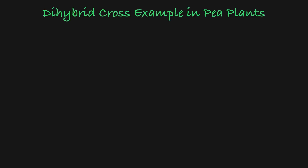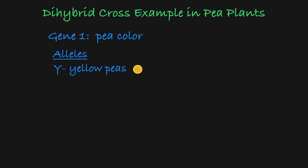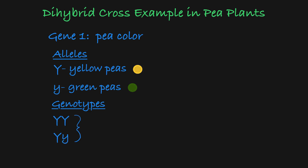Let's take a look at a classic Mendelian example in pea plants. The first gene we will look at confers pea color. This gene has two alleles: a dominant allele that results in yellow pea color, and a recessive allele that results in green pea color. So the homozygous dominant and heterozygous genotypes result in yellow peas, and the homozygous recessive genotype results in green peas.